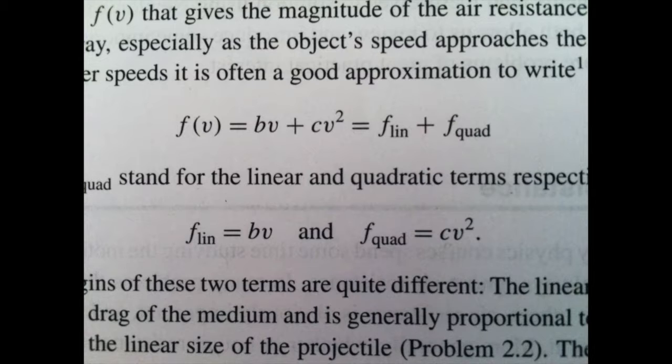In the first case, the resistance to motion is proportional to the velocity of the projectile through the fluid. In the second case, it's proportional to the square of the velocity. Either of these two types of air resistance can contribute. It depends on the fluid properties and the properties of the projectile and its velocity.